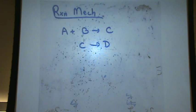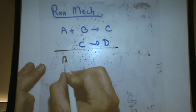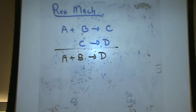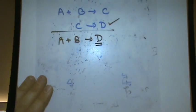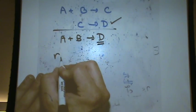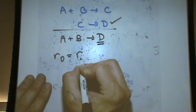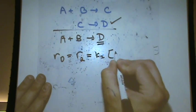The pseudo steady state hypothesis is where you say that the rate of appearance of an intermediate equals the rate of its disappearance. So there are two things we need to do here. First, let's write the overall reaction. You'll see it's A plus B goes to D. So because D is the main product, I'm going to write the rate law for the second reaction, because that's where the product is formed. The rate of production of D is really the second reaction, which is K2 times the concentration of C.